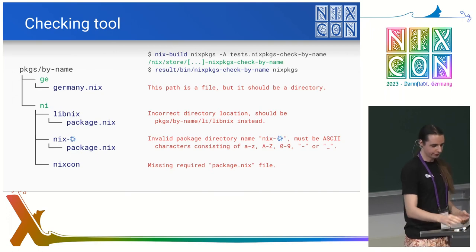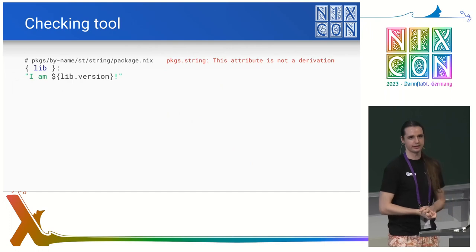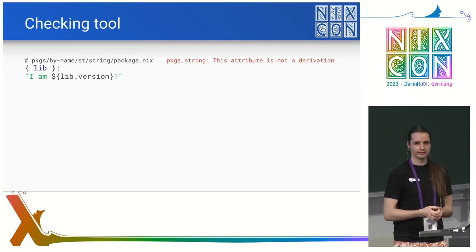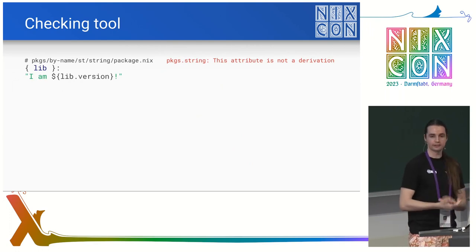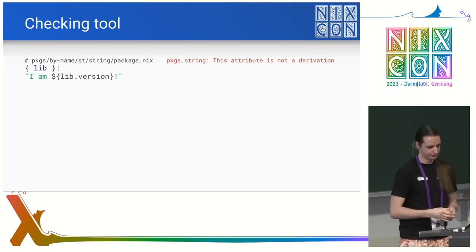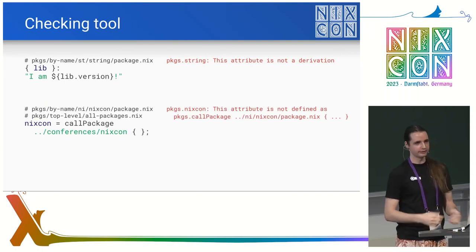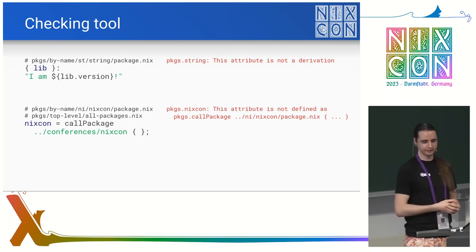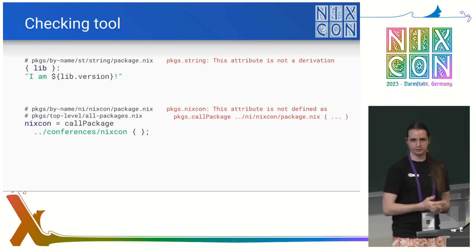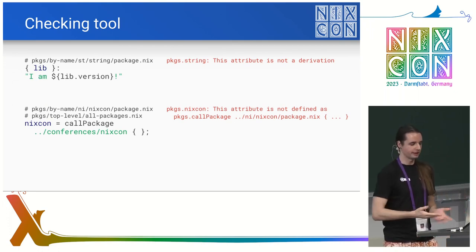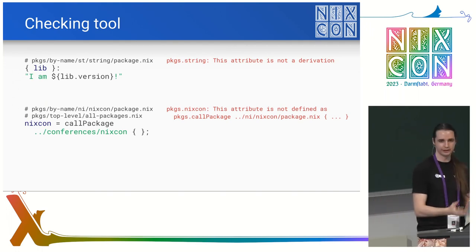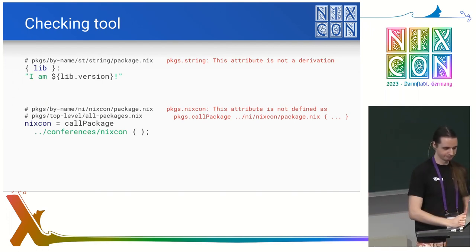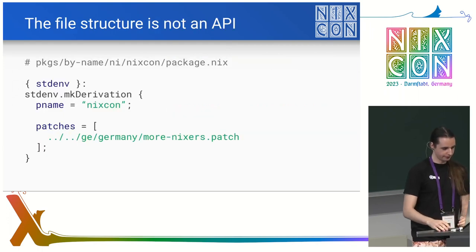Those are the structural checks. There are also semantic checks that look at the contents of actual files. One of them makes sure the files actually define derivations and don't define, say, a string. Another makes sure that if you have this directory defined in packages-by-name, the corresponding attribute actually has to be what we expect — it has to be call-package with the correct file — even if you override this in all-packages.nix and provide custom arguments.